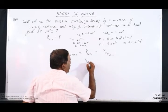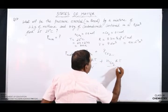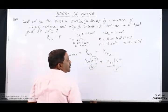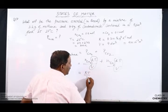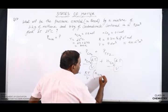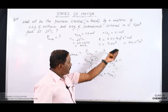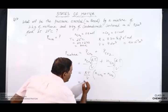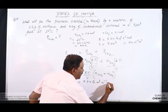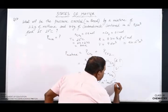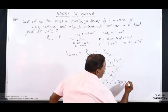So P(mixture) = N(CH₄)·RT/V + N(CO₂)·RT/V. Since RT/V is common in both terms, we take it as a common factor: P(mixture) = (RT/V) × [N(CH₄) + N(CO₂)]. The value of R is 8.314 Pascal·m³·K⁻¹·mol⁻¹, temperature is 300 Kelvin, and the sum of moles is 0.1 + 0.2 = 0.3 moles.